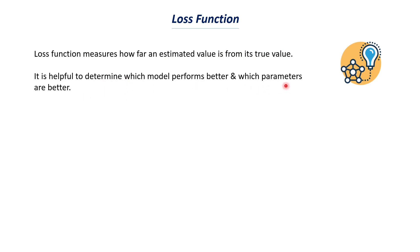Loss function is also useful for finding which parameters are better. Different models have different parameters, and even within a single model like logistic regression, changing the parameters changes the predictions. We need to find which parameters are best suited for a particular dataset. We can take one model, try two different sets of parameter values, find the loss value in each case, and the set of parameters that gives a lower loss value is the better one.